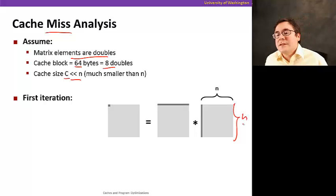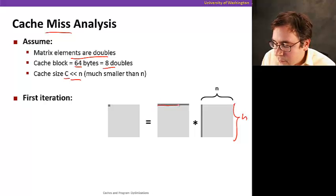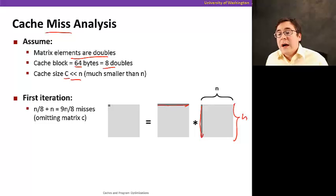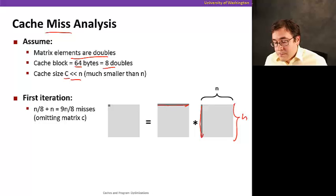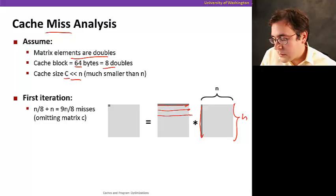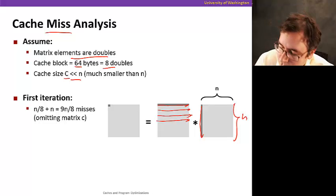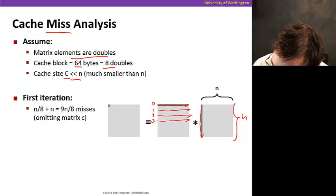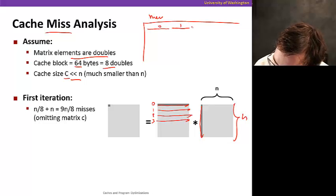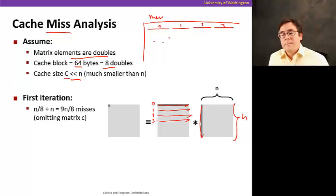In the first iteration, we're going to read the entire row of matrix A and the entire column of matrix B. Keep in mind that data is laid out in row-major order — an entire row is stored contiguously in memory, then another row, then another row, and so on. So if we have rows 0, 1, 2, 3, they are laid out sequentially in memory.